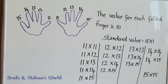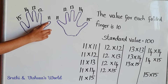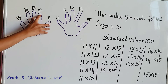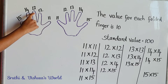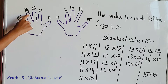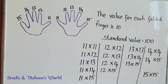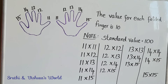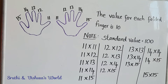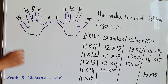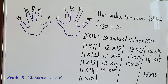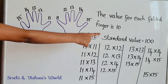The value for the pinky finger is 11, ring finger 12, middle finger 13, index finger 14, and thumb 15 — same with the other hand. The value for each folded finger is 10, and remember that the standard value is 100.